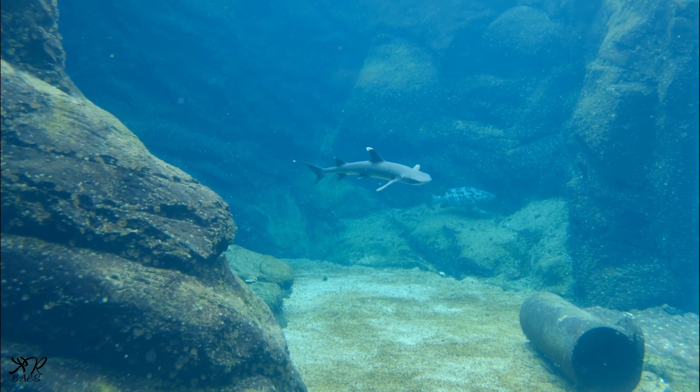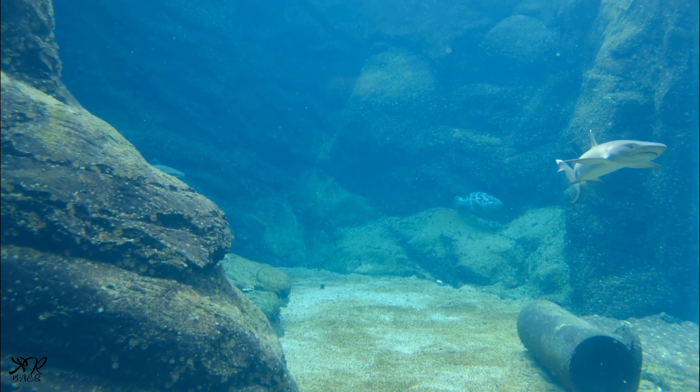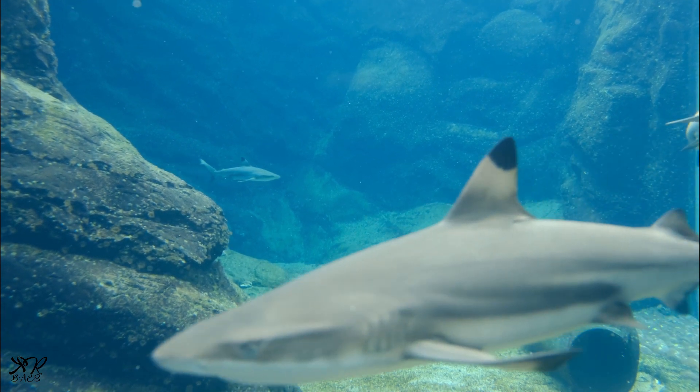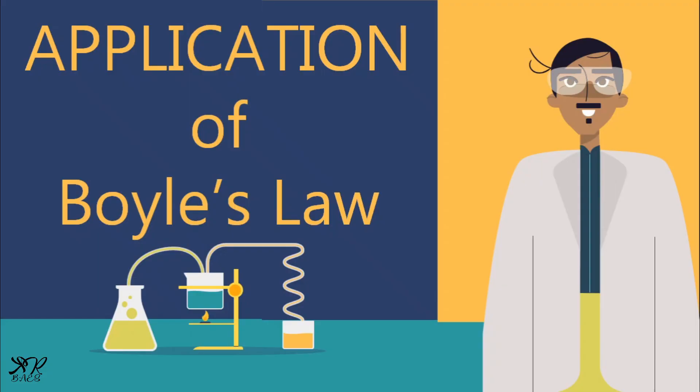Deep sea fishes die when brought to the surface. The pressure decreases, thereby causing the volume of gases in their bodies to increase in size. This causes the membranes of their bladders and cells to pop.